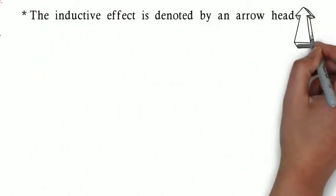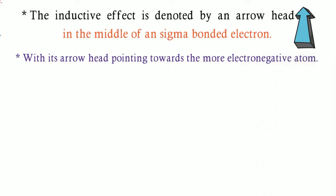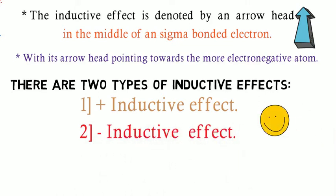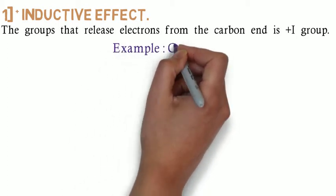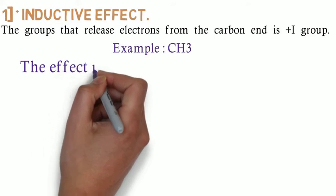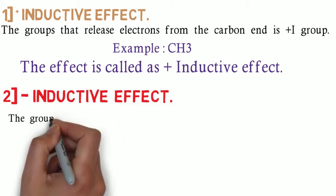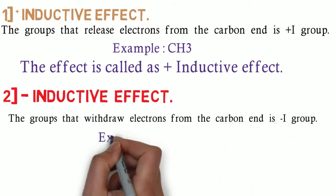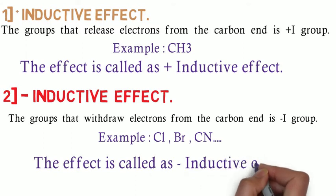The inductive effect is denoted by an arrow in the middle of a sigma bond with the arrowhead pointing towards the more electronegative atom. There are two types of inductive effect: plus inductive effect and minus inductive effect. In the plus inductive effect, the groups that release electrons from the carbon end are known as plus-I groups — for example, CH₃ — and the effect is known as the plus inductive effect. In the minus inductive effect, groups that withdraw electrons from the carbon end are known as minus-I groups; examples are chlorine, bromine, cyanide, and so on, and the effect shown by them is called the minus inductive effect.